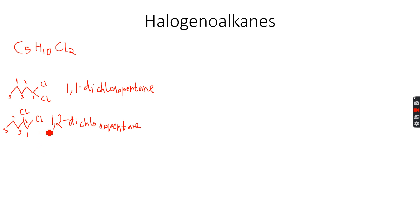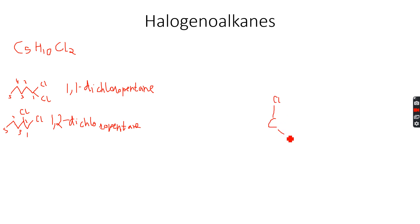1,2-dichloropentane will have a stereoisomer. Even though there is no carbon-carbon double bond and therefore no geometric isomers, the second carbon atom is a chiral center. Since the second carbon atom is a chiral center, this compound will exist as two optical isomers. We always draw a three-dimensional shape for optical isomers.